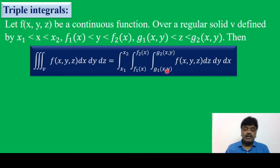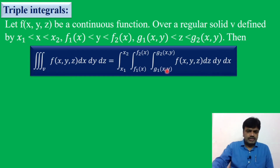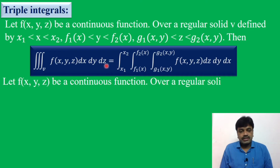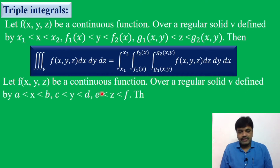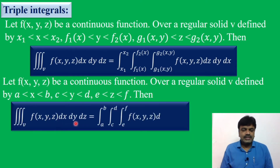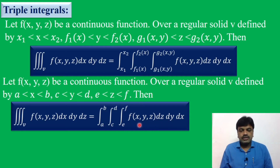Now, if all the limits are constants, we can follow the given order. Let f of x, y, z be a continuous function over a regular solid V defined by a less than x less than b, c less than y less than d, e less than z less than f. Here all x, y, z limits are constants. Then the triple integral over V equals integral a to b, integral c to d, integral e to f, f of x, y, z dz dy dx. This is the proper order.